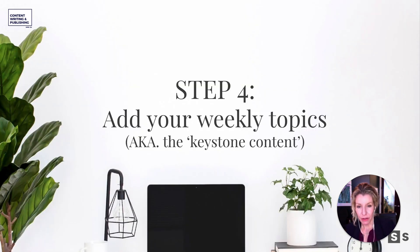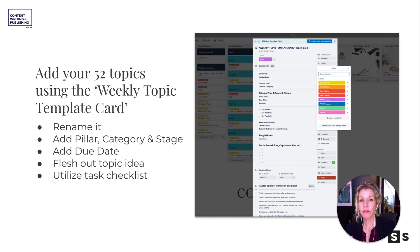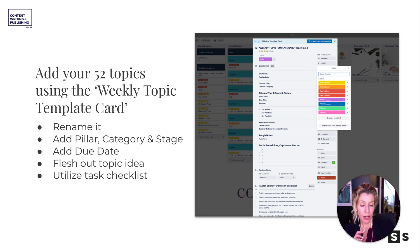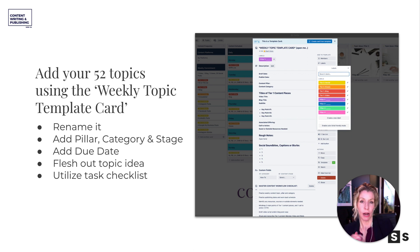The most important part of this: if you do nothing else, I would love for you to add 52 — or 26 if you can't do a whole year's worth — of weekly topic ideas to those template cards. Then add in the pillar, category, and stage if you want; add a due date; flesh out the topic idea with some key points or titles or rough notes. I love to write my blog post in this card — this is where everything lives so that there's not a word doc somewhere else or a note somewhere else. I open this card, look at the topic I'm supposed to write about that week, and just start writing it.